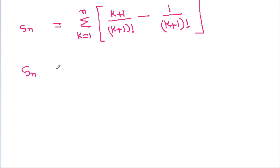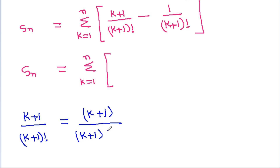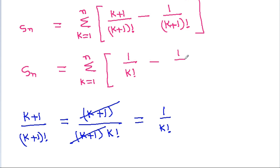Sn equals the summation from k equals 1 to n of (k+1) divided by (k+1) factorial minus 1 divided by (k+1) factorial. Now (k+1) factorial equals (k+1) times k factorial, so (k+1) cancels, giving 1/k! minus 1/(k+1)!.